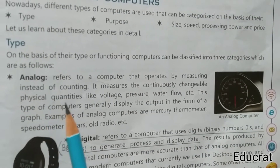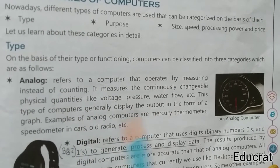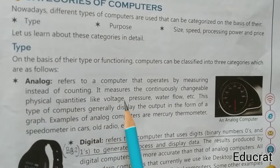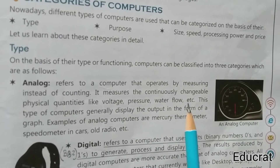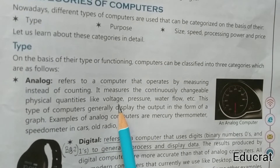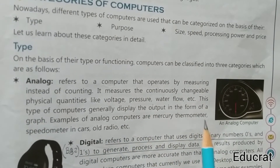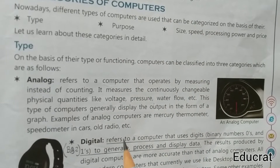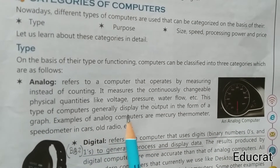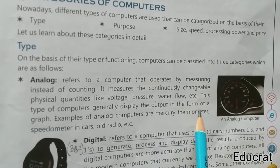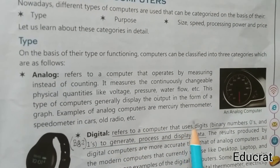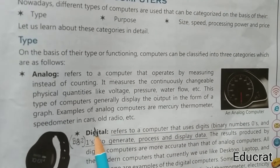An analog computer is a computer that works by counting and measuring. This type of computer generally displays the output in the form of a graph. Examples of analog computers include a mercury thermometer and a speedometer in cars.